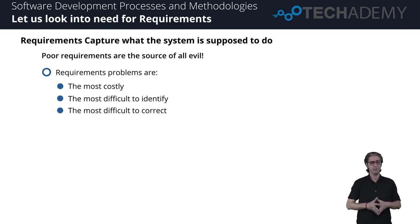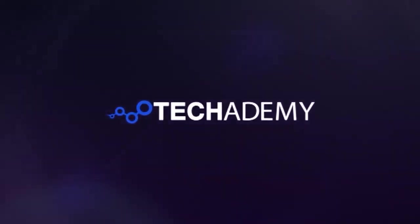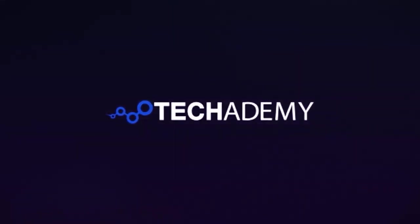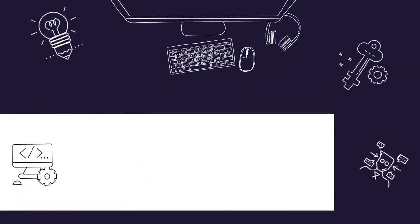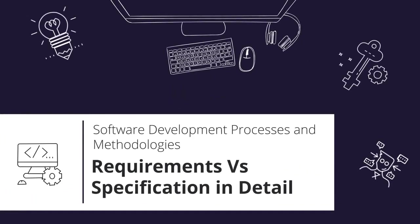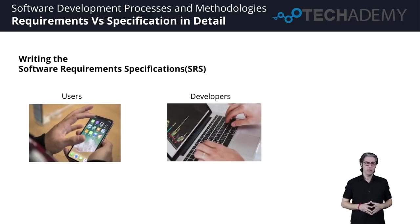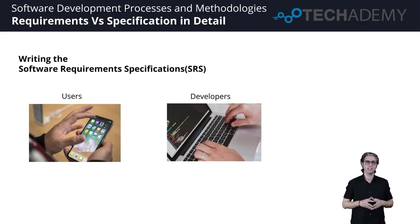That's all for this particular lecture. Thanks a lot for watching — I'll see you in the next one. In this lecture, let us differentiate between the two ways in which we document the functionality in a specification document for software requirements. There are two methods to write these statements about what the system will do, because there are two audiences for that particular piece of information.